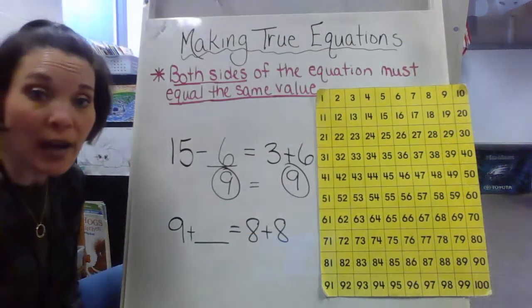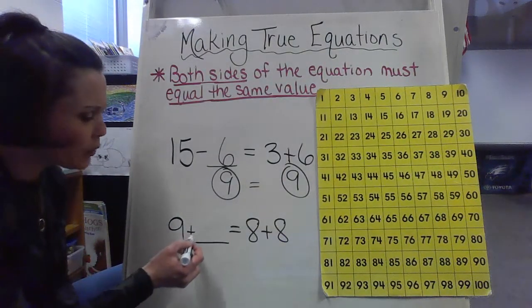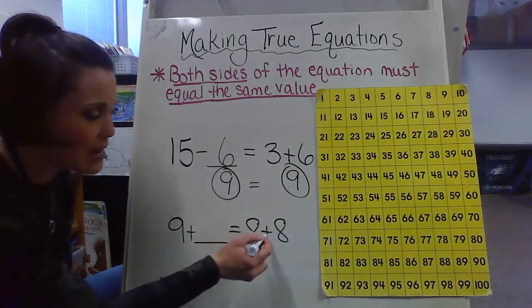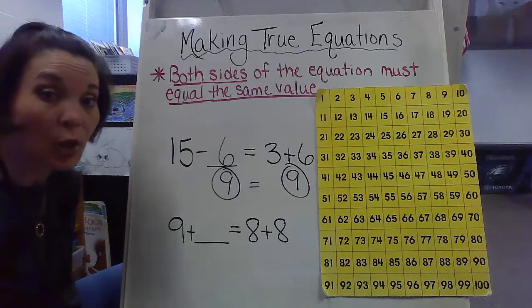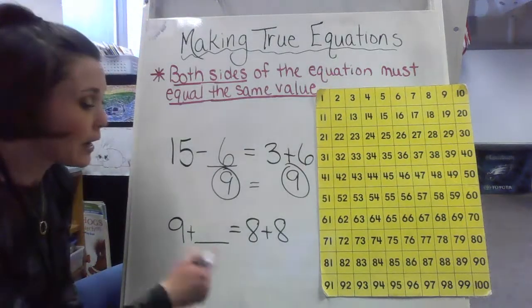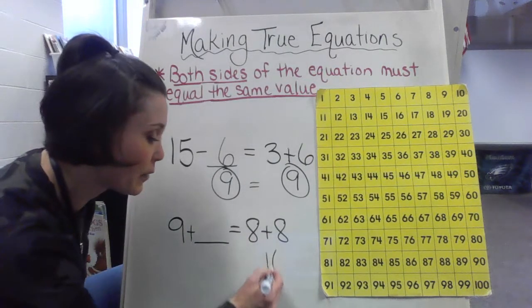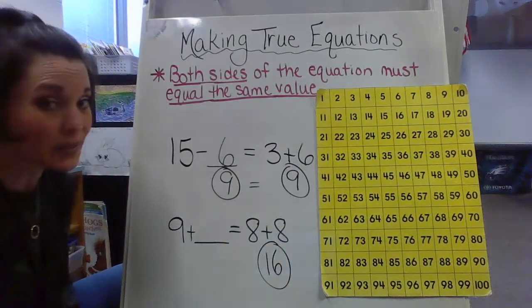So let's go into our next one. So we have 9 plus blank equals 8 plus 8. Well, if you know your double facts, 8 plus 8, easy peasy again, 16.